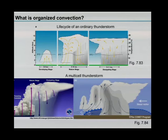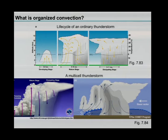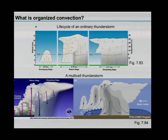Going back to my other slide: what is organised convection? Steve actually showed this image — an ordinary thunderstorm or air mass thunderstorm — where you go through this development: you have growth of the storm, rising motion, development of precipitation, and then through the dissipating stages you have stratiform precipitation. So that's your ordinary disorganised system where it's really just one cell that rises, you get condensation, you get precipitation, and then it dissipates over time.